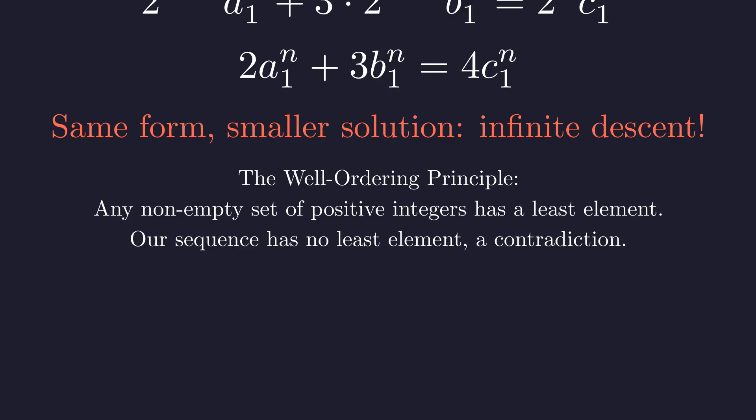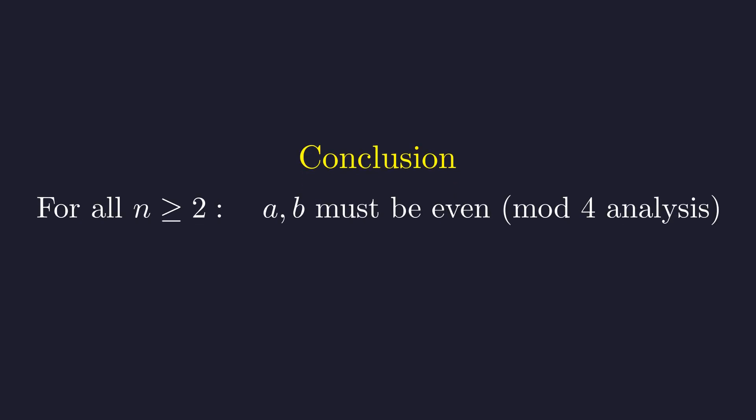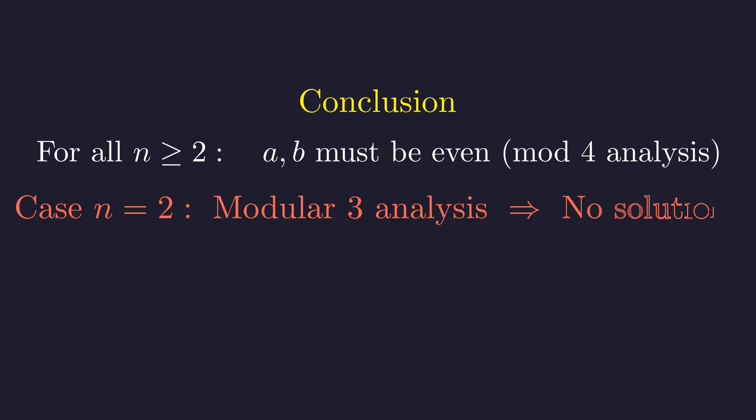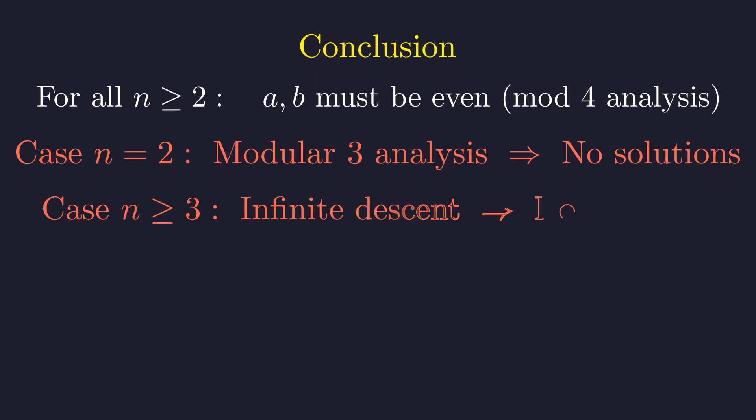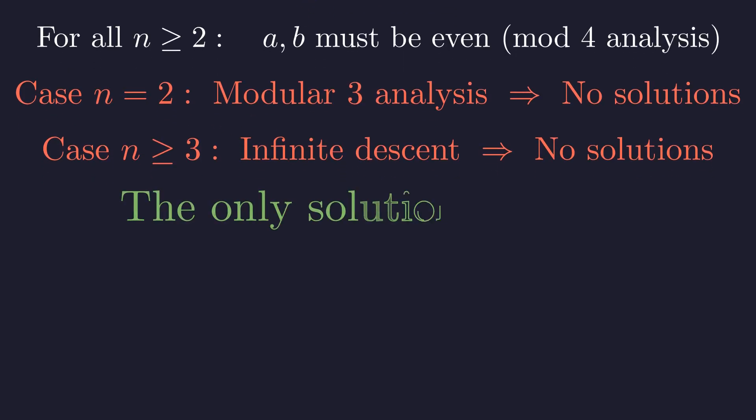We have now completed our analysis for all possible values of n. First, we established that for any n greater than or equal to two, both a and b must be even. For n equals two, our modular three analysis showed no solutions exist. For n greater than or equal to three, the method of infinite descent showed no solutions exist. This leaves us with our final answer: the only positive integer for which this equation has a solution is n equals one.